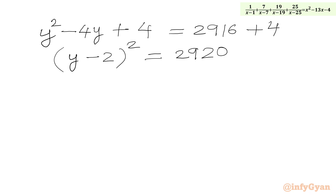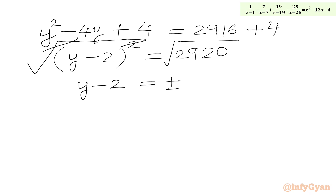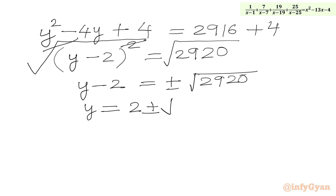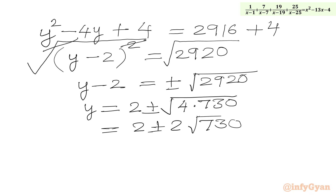Taking the square root of both sides, we get y minus 2 equal to plus or minus square root of 2920. Therefore y equal to 2 plus or minus square root of 2920. We can factor 2920 as 4 times 730, so the square root simplifies: y equal to 2 plus or minus 2 times square root of 730. This is the value of y from our substitution.